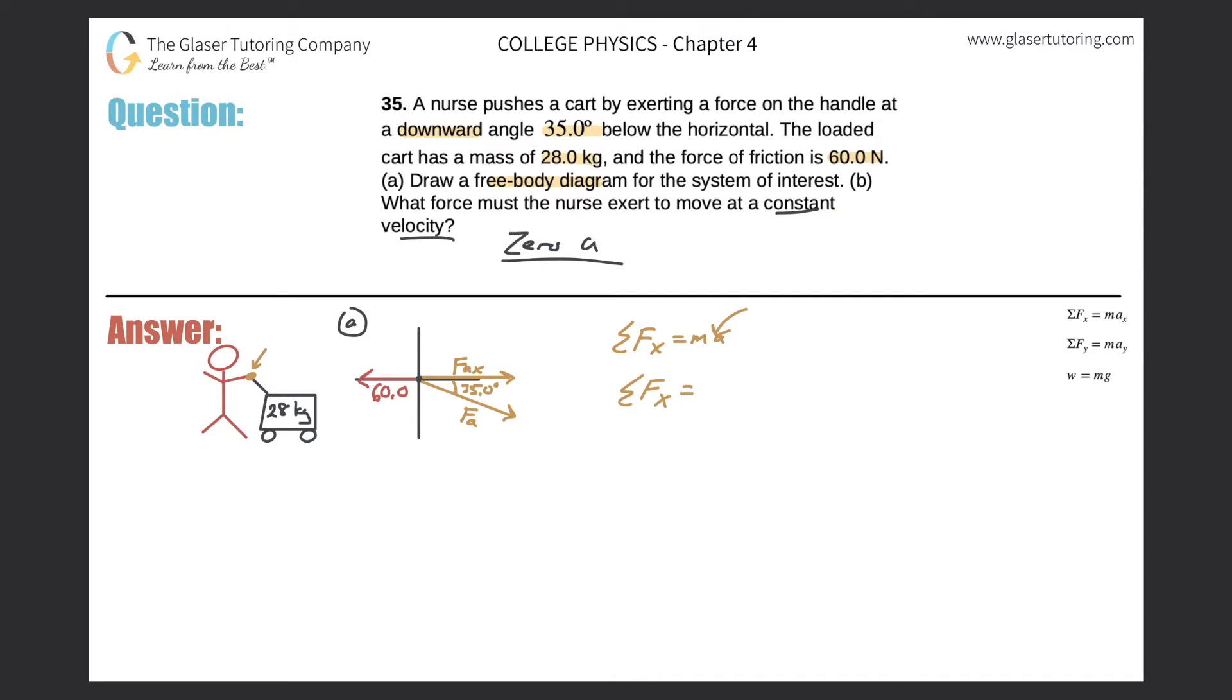What are the forces in the x direction? There are two: we have a positive force applied in the x direction minus the 60 newton frictional force that will equal zero. So the force applied in the x direction equals 60 newtons. But that's not the answer - we're getting close.